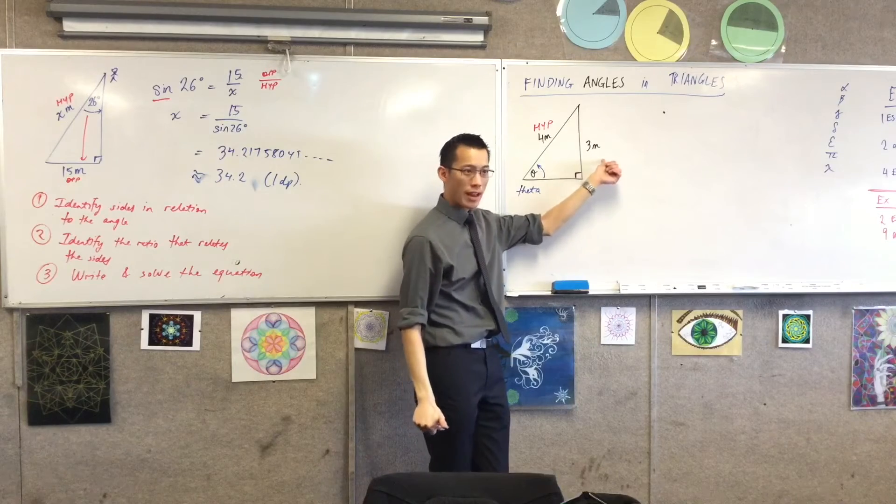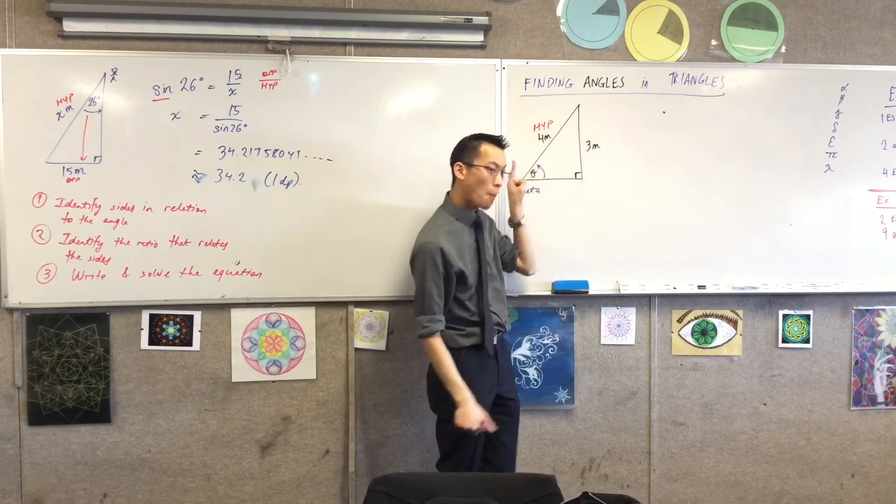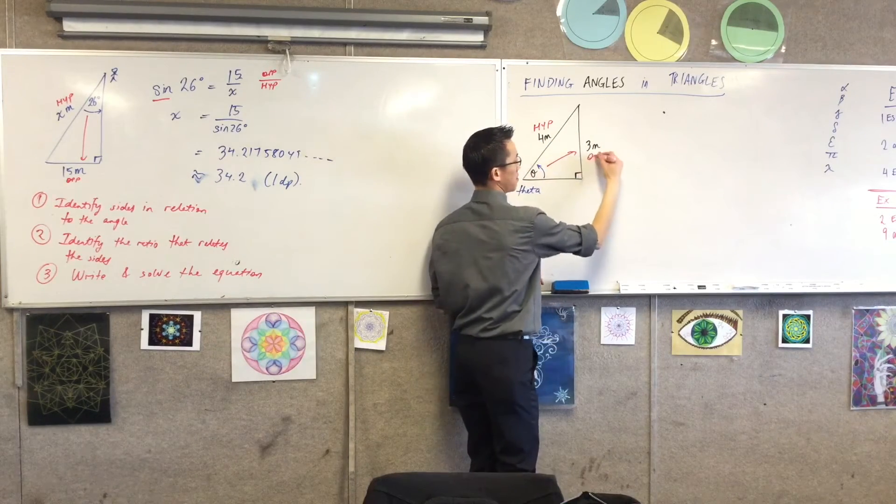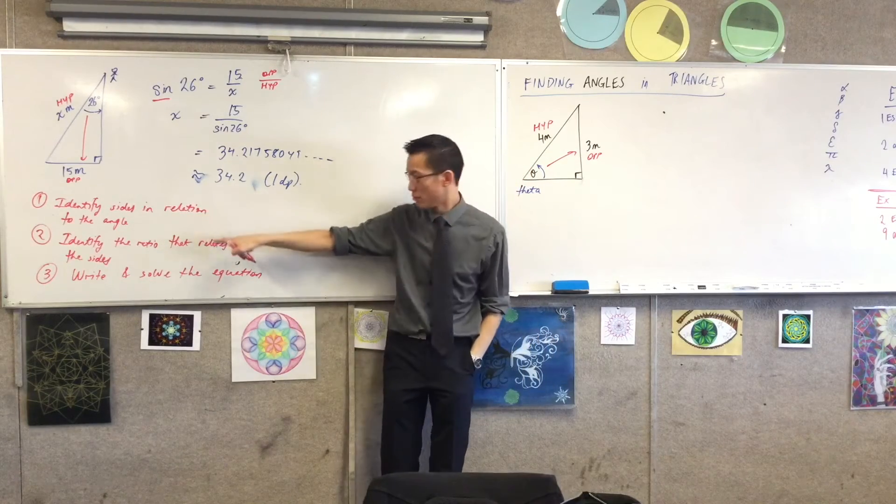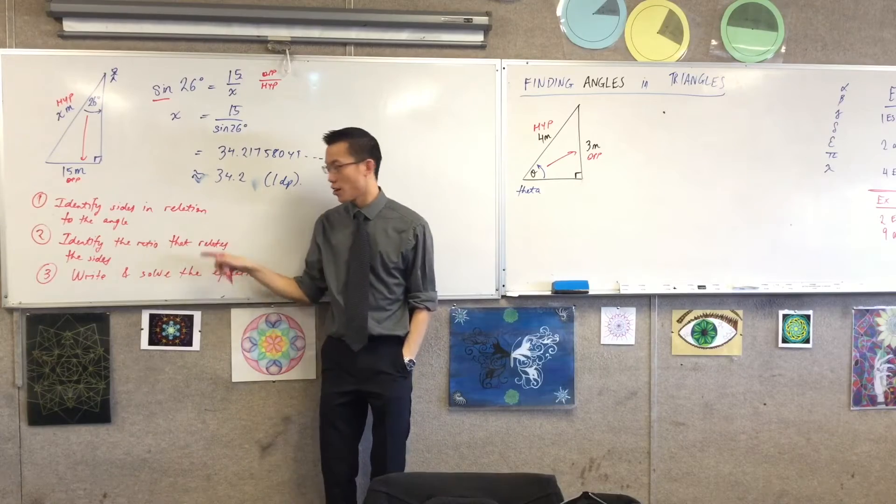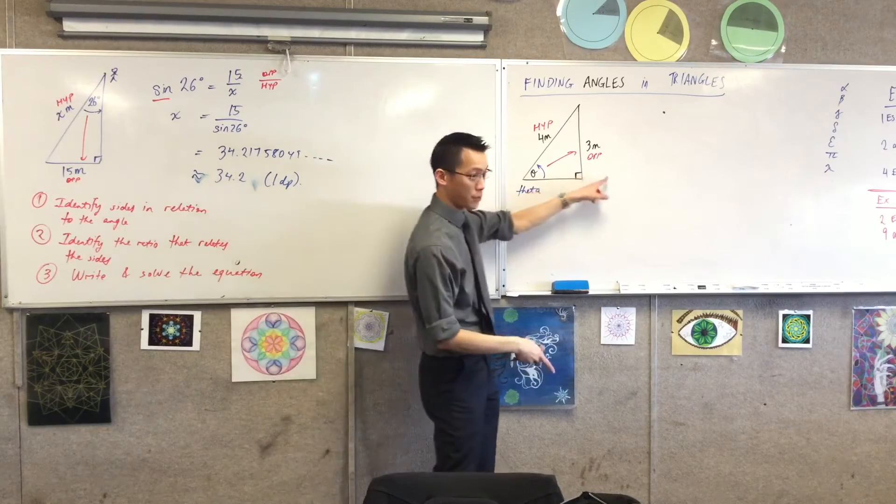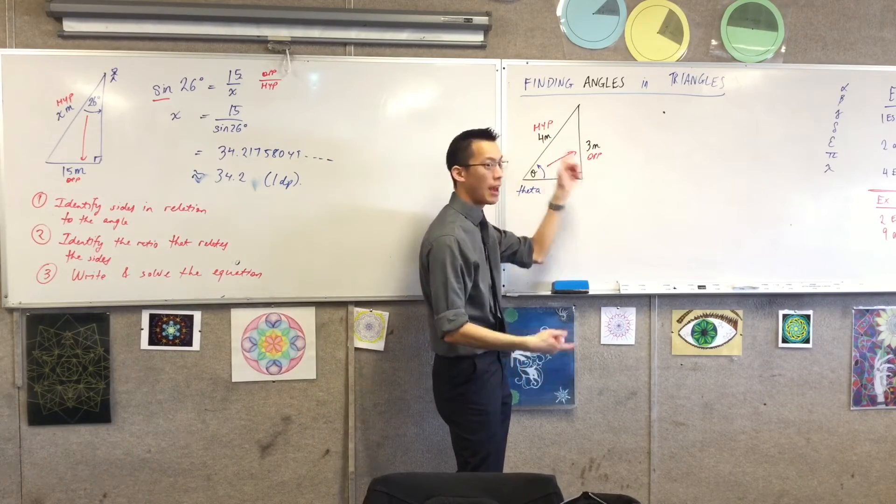You look at this other one, and it's all the way on the opposite side of the triangle, right? So having identified the sides in relation to the angle, I then identify the ratio that relates those sides. Opposite on hypotenuse? It's sine. Very good.